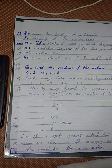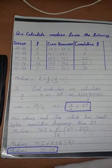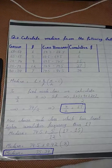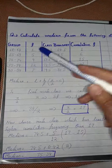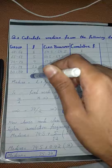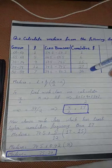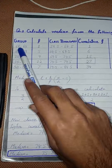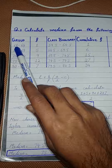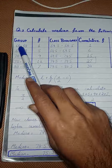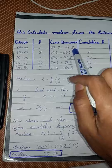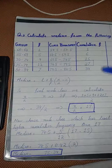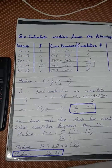اب ہم grouped data دیکھتے ہیں۔ جیسا کہ آپ کو بتایا، grouped data میں class limits اور frequency دی ہوتی ہے، باقی دو چیزیں ہم نے خود calculate کرنی ہیں — class boundaries اور cumulative frequency۔ Class boundaries بنانے کا آسان طریقہ یہ ہے کہ lower limit میں سے 0.5 minus کریں اور upper limit میں 0.5 add کر دیں۔